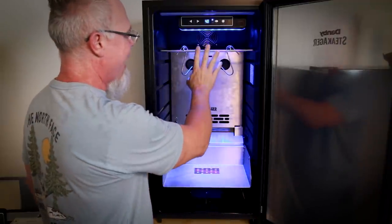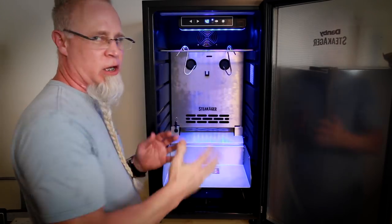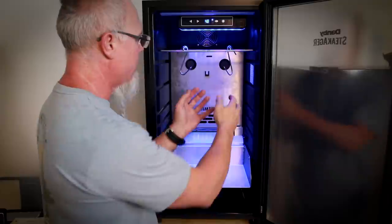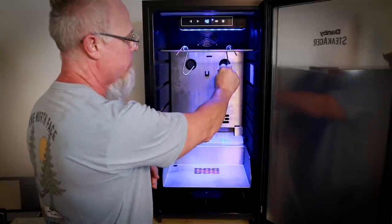This is your removable top rack here. This is so you can hang if you wanted to truss up your subprimal. You could hang it from here and not use those racks at all, or you could use these to hold your charcuterie.